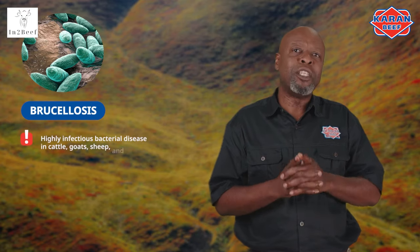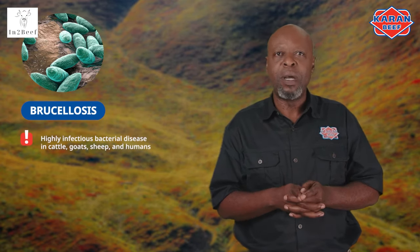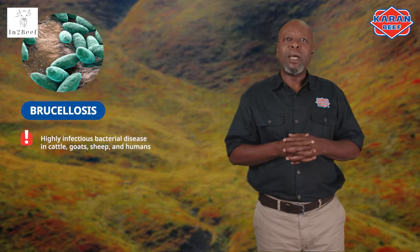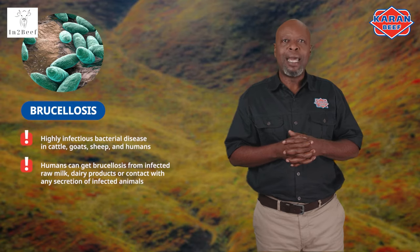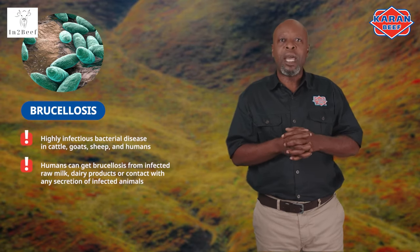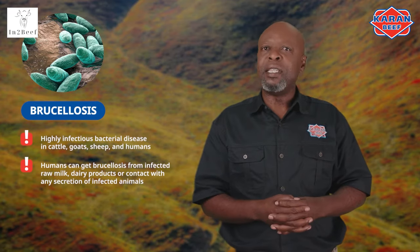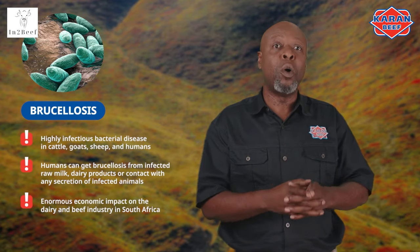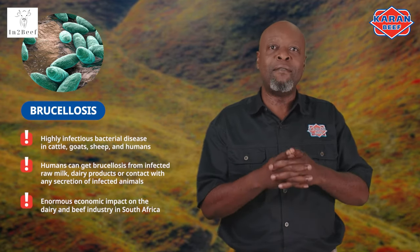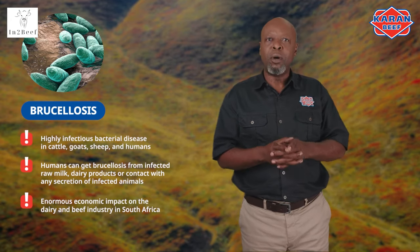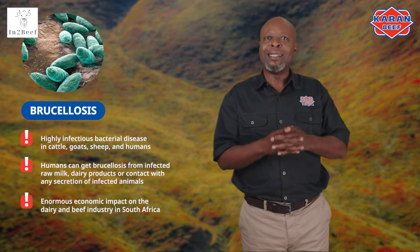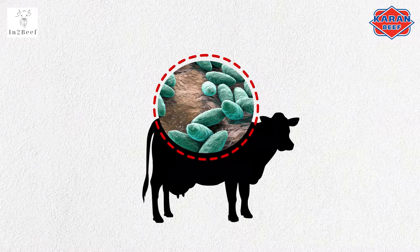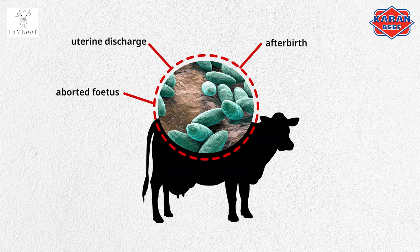Brucellosis is a highly infectious bacterial disease in cattle, goats, sheep, and humans, caused by the bacterium Brucella abortus in cattle. Humans can get brucellosis from the consumption of infected raw milk and dairy products, or by coming in direct contact with any secretion of infected animals. The disease has an enormous economic impact on the dairy and beef industry in South Africa and is widely spread throughout the country, especially where cattle are farmed intensively. It is a notifiable disease controlled by the state. Infected cows will spread the bacteria in the aborted fetus, uterine discharge, and afterbirth.